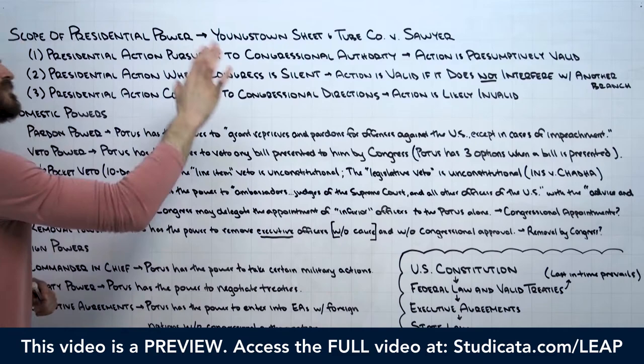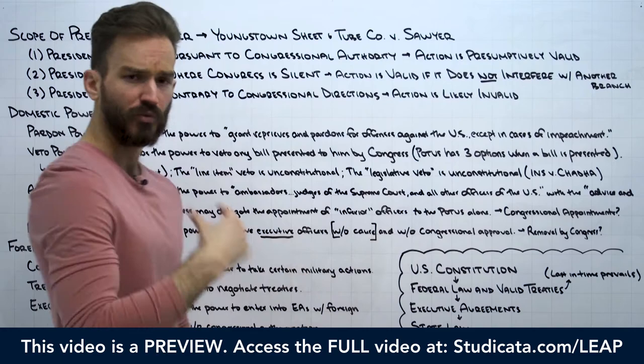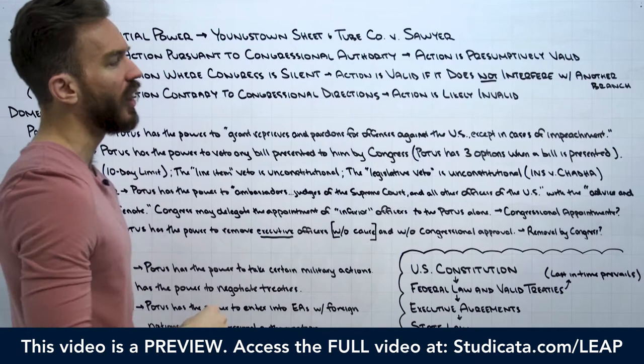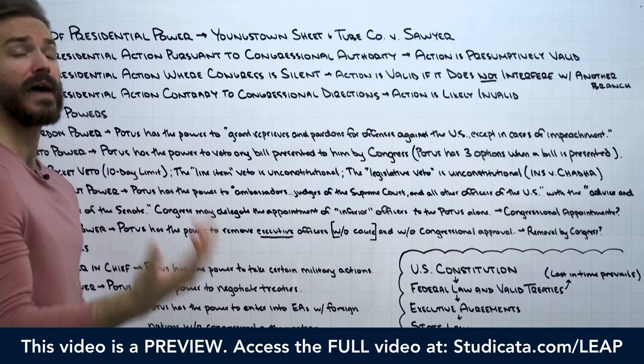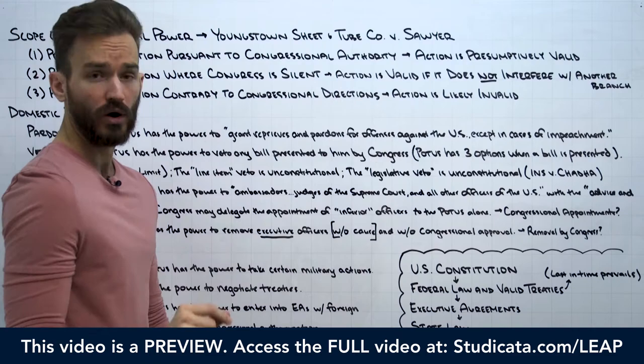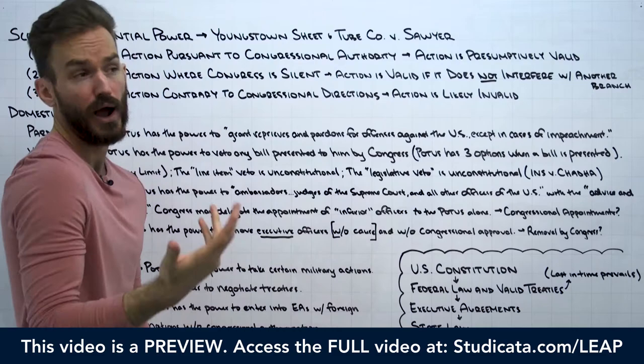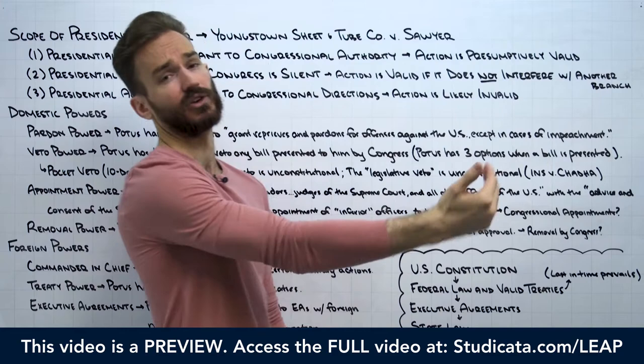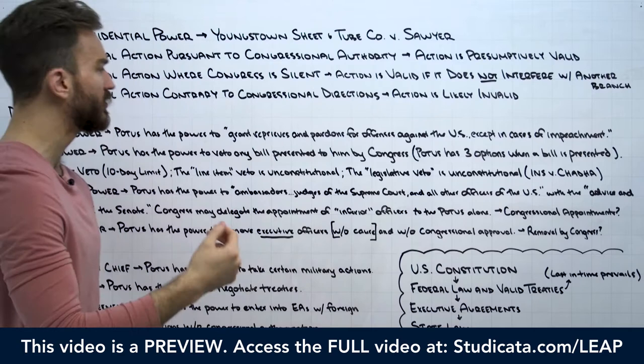Before we jump into it, as a big picture refresher from an issue-spotting perspective, what are we looking for on a constitutional law fact pattern to know these things are at issue? If you think back, we talked about Article 3 and the federal courts — the issue was whether the federal court had the power to take action, whether it had the power to hear and decide a case.